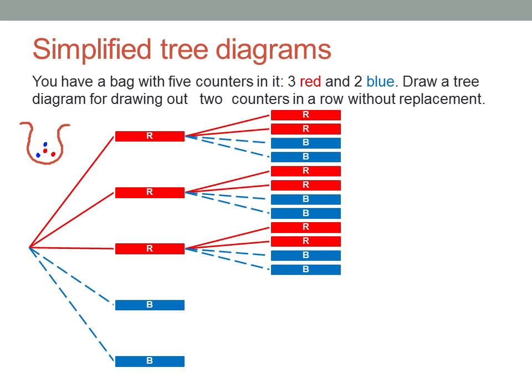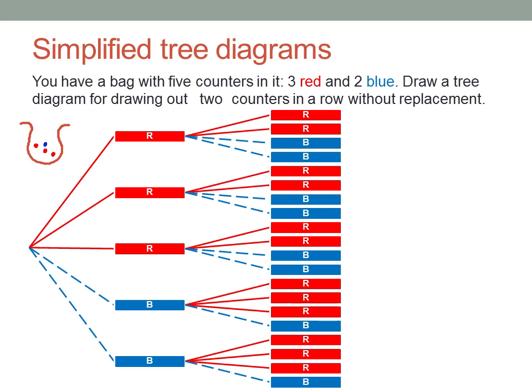If the first counter is red, then there are only two red counters left for the second draw. And if the first counter is blue, then there are three red counters left but only one blue counter left for the second draw.